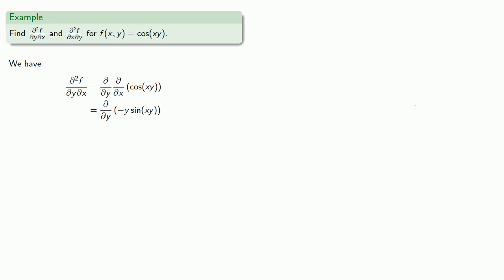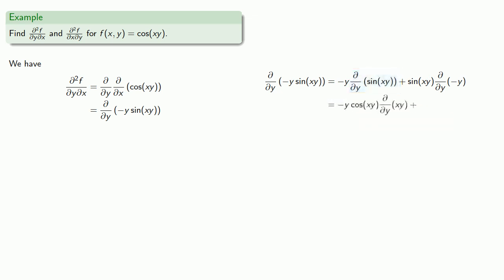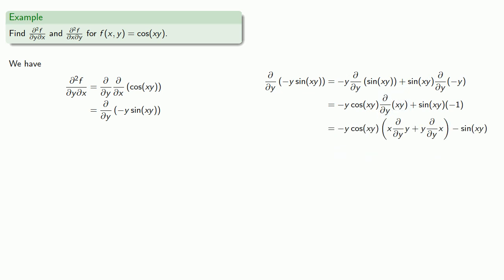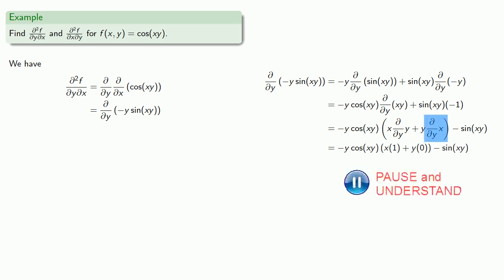Now we need to differentiate minus y sine(xy) with respect to y. This is a product, so we apply the product rule. We have the partial derivative of sine(xy) with respect to y — treating x like a constant — so our derivative will follow accordingly. The derivative of minus y with respect to y gives us our next term. Since we're differentiating with respect to y, we treat x as a constant, so that derivative is 0. And so we get this as our final answer.